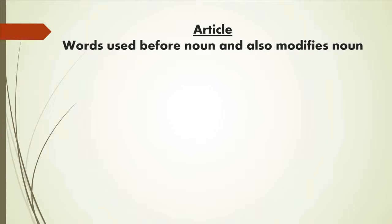I'd like to give you the definition of article. Articles are words that define a noun as specific or unspecific, that means it will be used before a noun and also it will modify a noun.